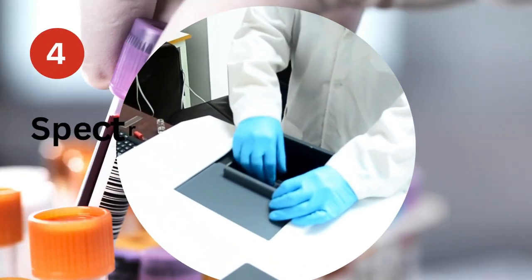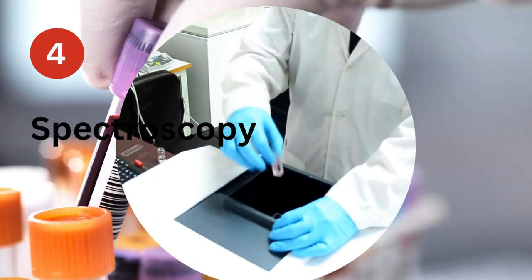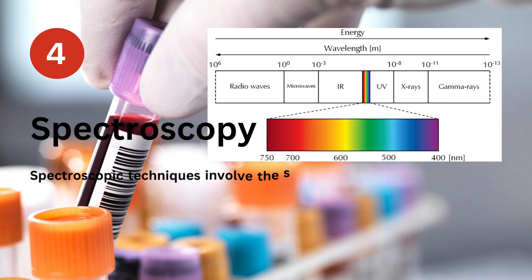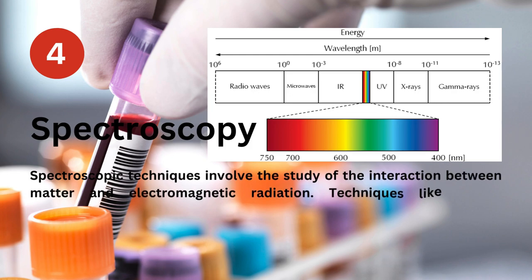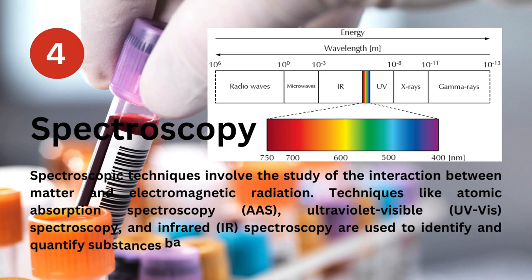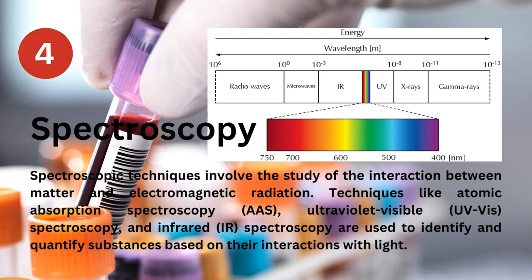Spectroscopy: Spectroscopic techniques involve the study of the interaction between matter and electromagnetic radiation. Techniques like atomic absorption spectroscopy (AAS), ultraviolet-visible (UV-Vis) spectroscopy, and infrared (IR) spectroscopy are used to identify and quantify substances based on their interactions with light.